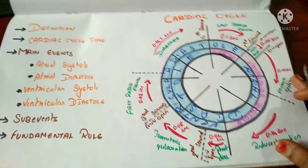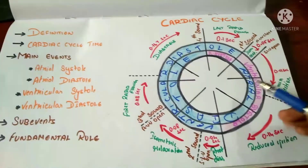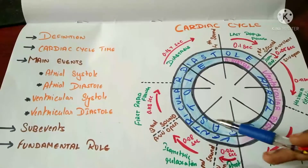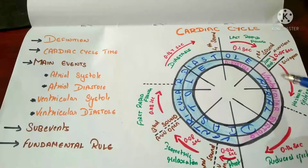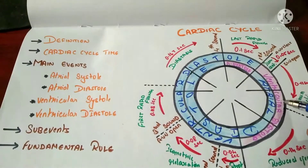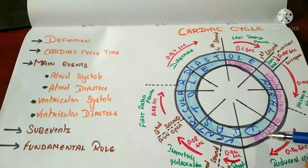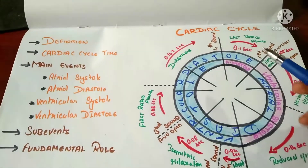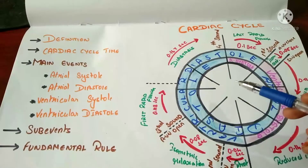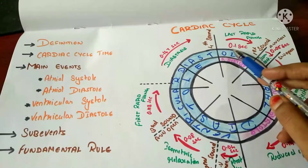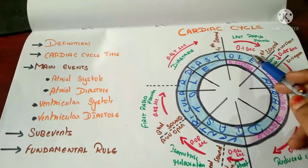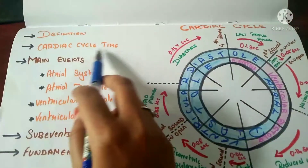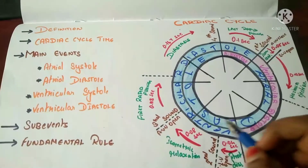Now I will describe the cardiac cycle diagram. If you understand this diagram you can present it in your exam very easily. The cycle consists of two concentric circles: the inner circle describes the atrial cycle and the outer circle describes the ventricular cycle. The concentric circles are divided into eight parts, and each part is 0.1 second.